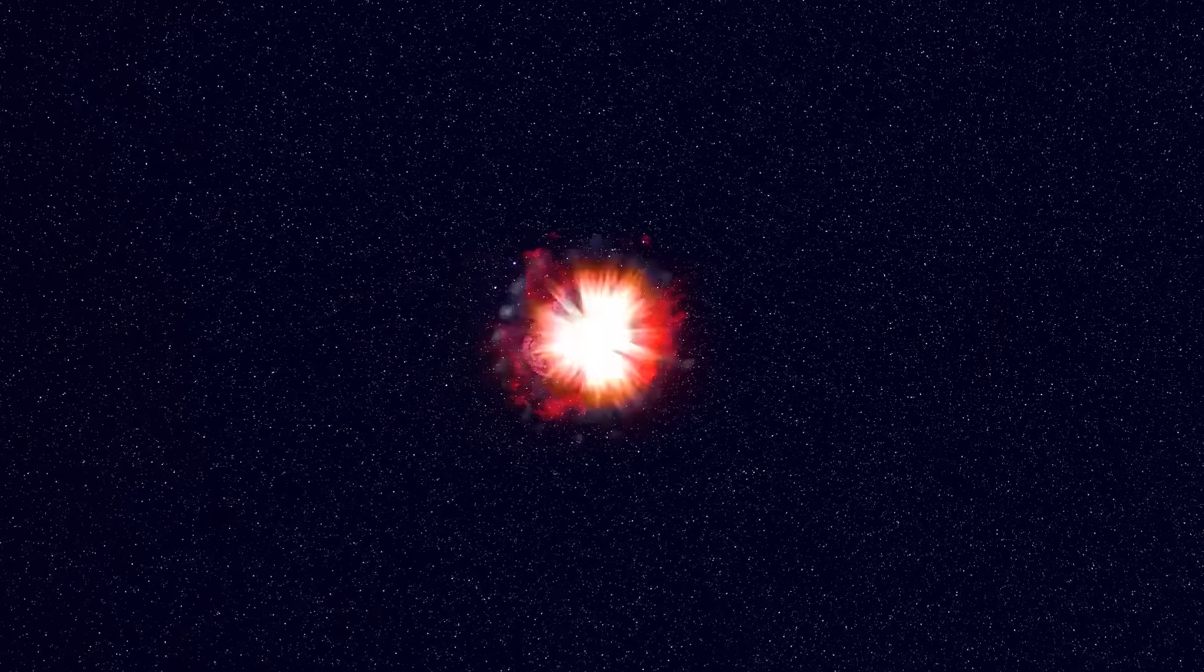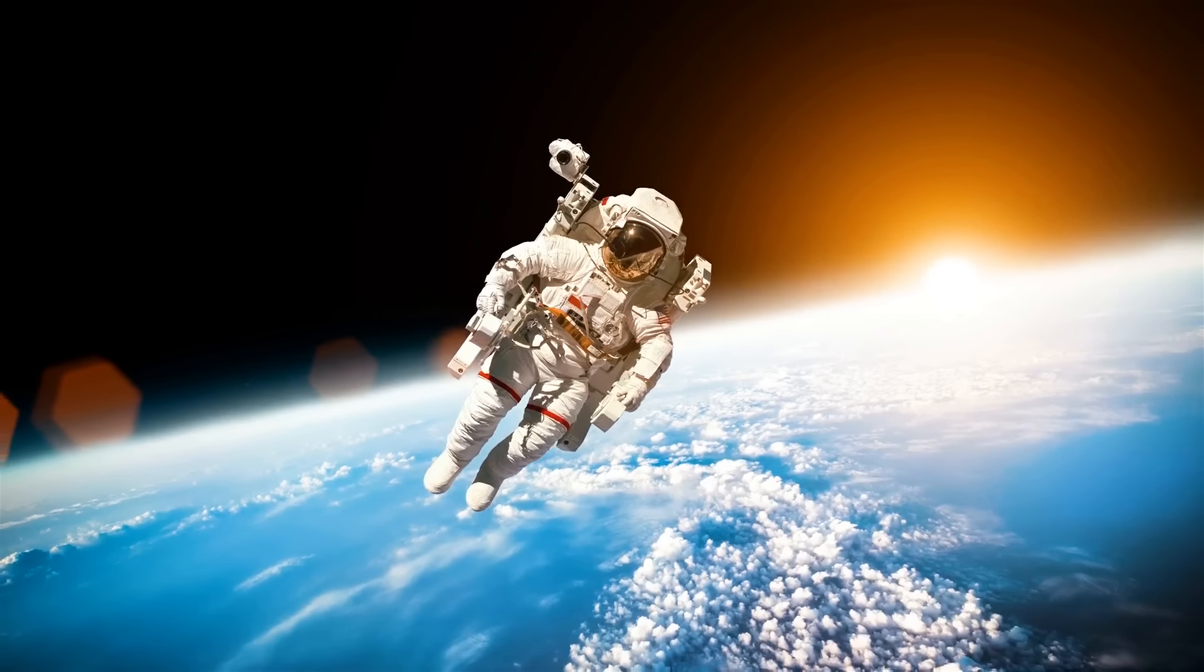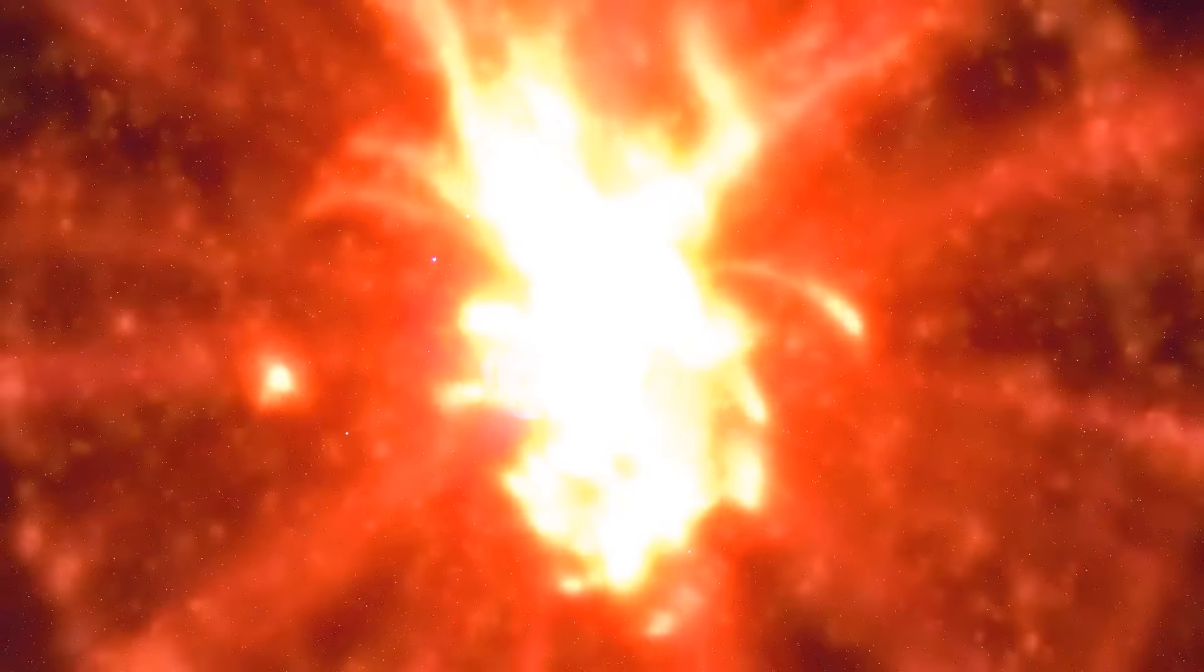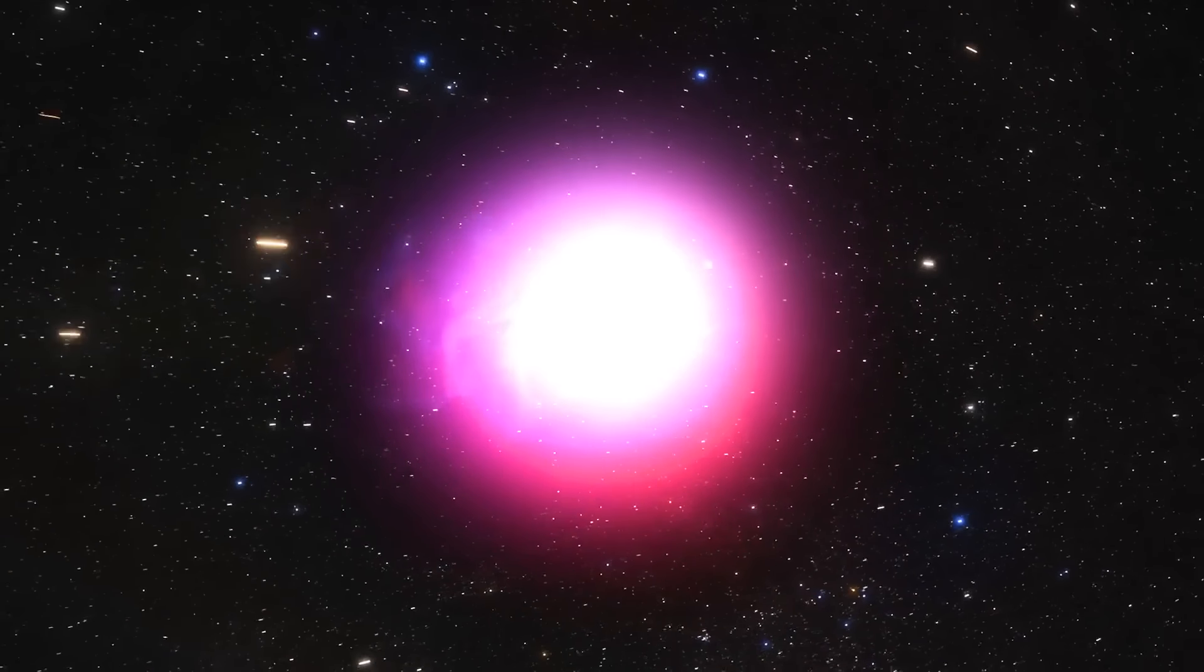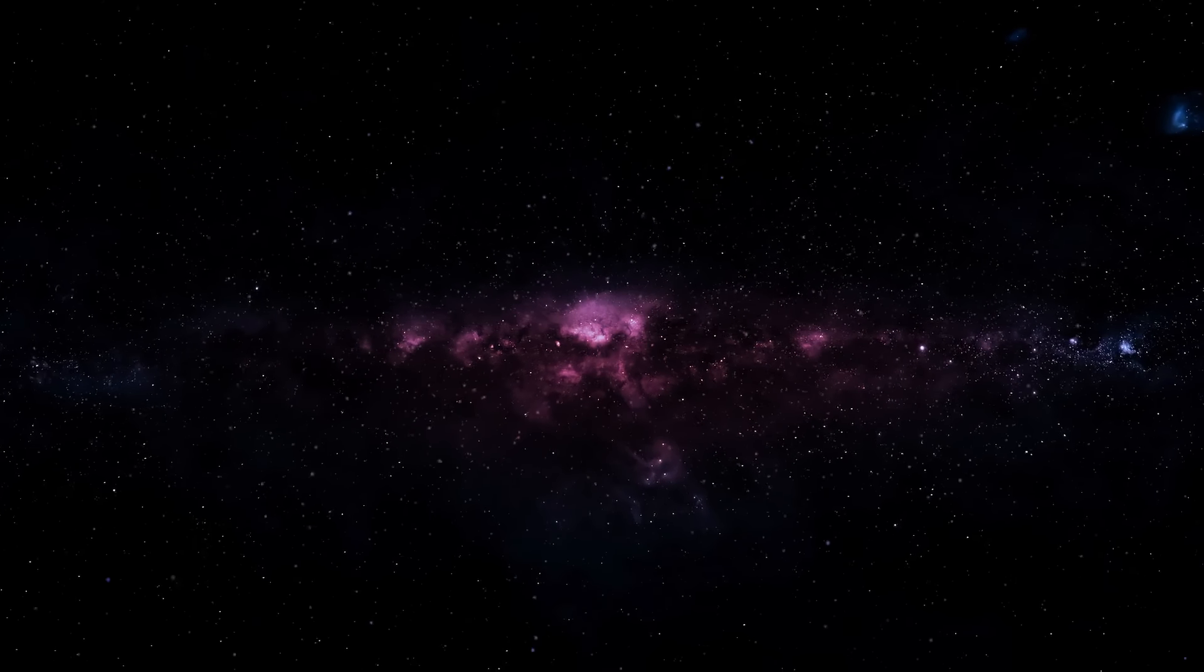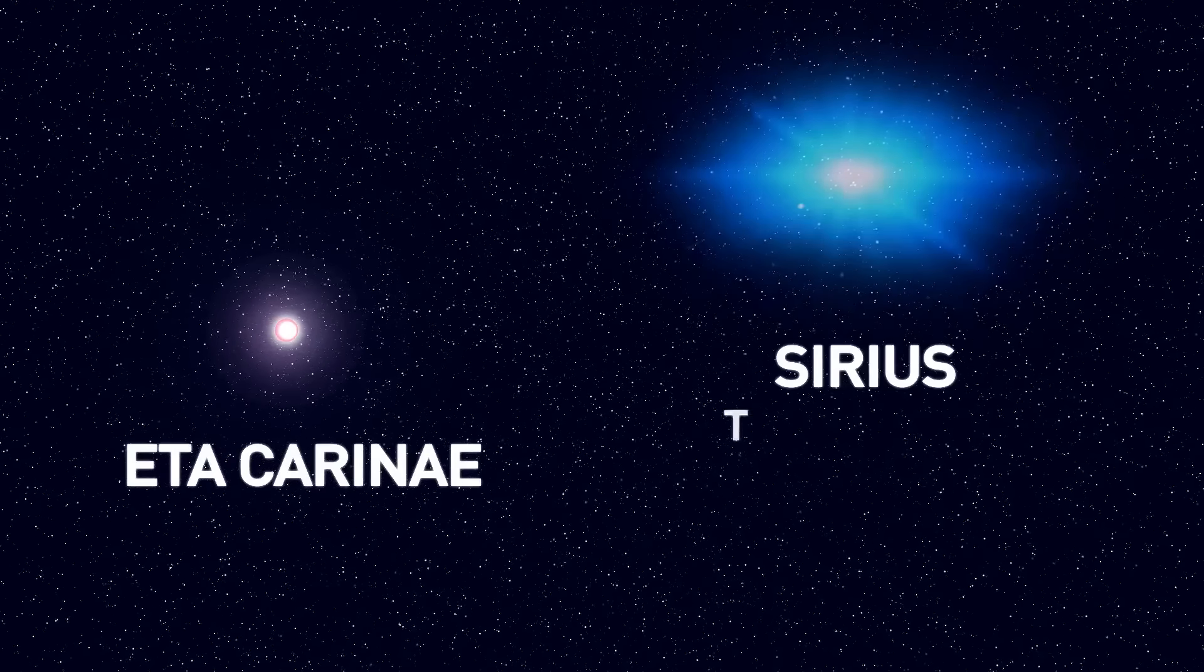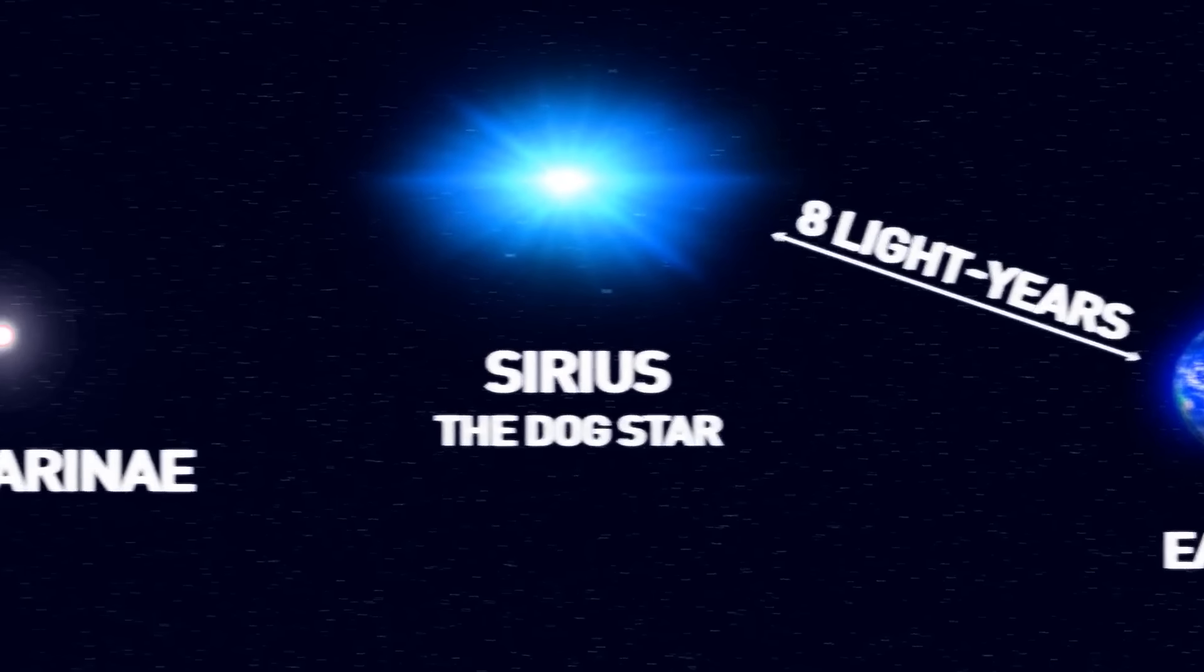Yet even at this distance, if this star goes hypernova, it can still impact Earth's ozone layer, disrupt satellite communications, and harm astronauts. 159 years after Halley's observation, Eta Carinae experienced a nova-like explosion. It increased from a relatively dim star to become the second brightest star visible from Earth, but only for a period of 27 years. From 1836 until 1863, Eta Carinae was the second brightest visible star after Sirius the dog star. And Sirius is only about 8 light-years away.